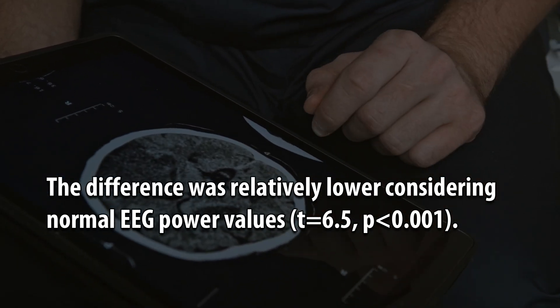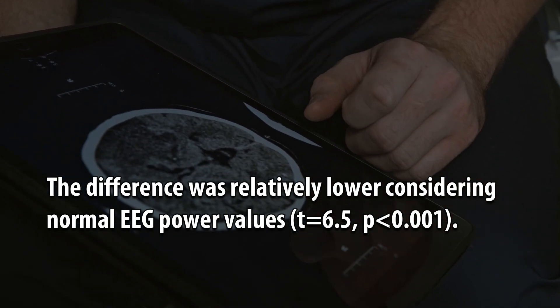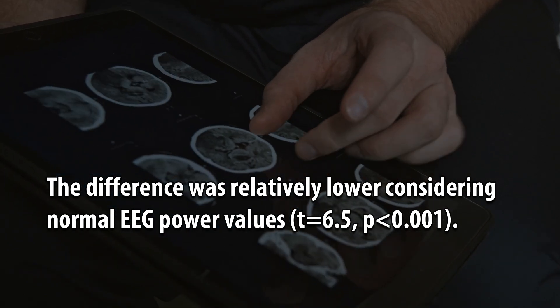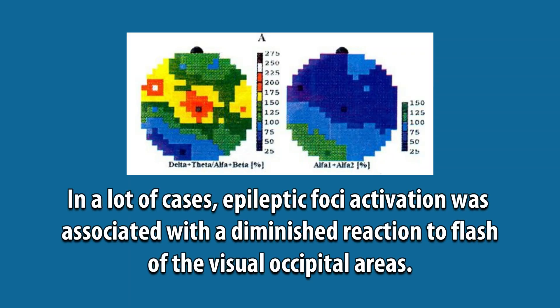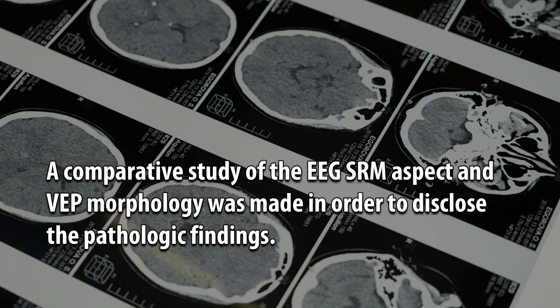The difference was relatively lower considering normal EEG power values (t = 6.5, p < 0.001). In a lot of cases, epileptic foci activation was associated with a diminished reaction to flash of the visual occipital areas. A comparative study of the EEG SRM aspect and VEP morphology was made in order to disclose the pathologic findings.